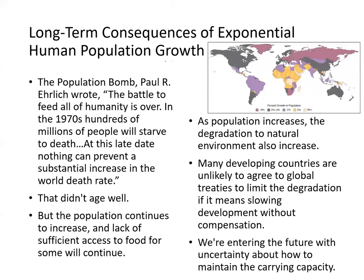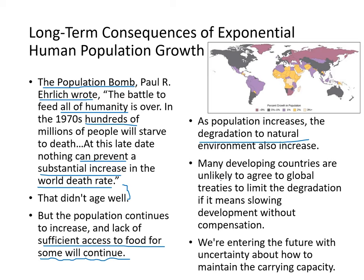The long-term consequences of exponential human population growth are debated. Paul Ehrlich's book Population Bomb warned that hundreds of millions would starve in the 1970s — which didn't age well, but contains some truth. If population continues rising, insufficient access to food and resources will persist, and degradation of the natural environment will increase. Developing countries are unlikely to agree to global treaties limiting degradation if it means slower development, and we face uncertainty as fossil fuels run out.